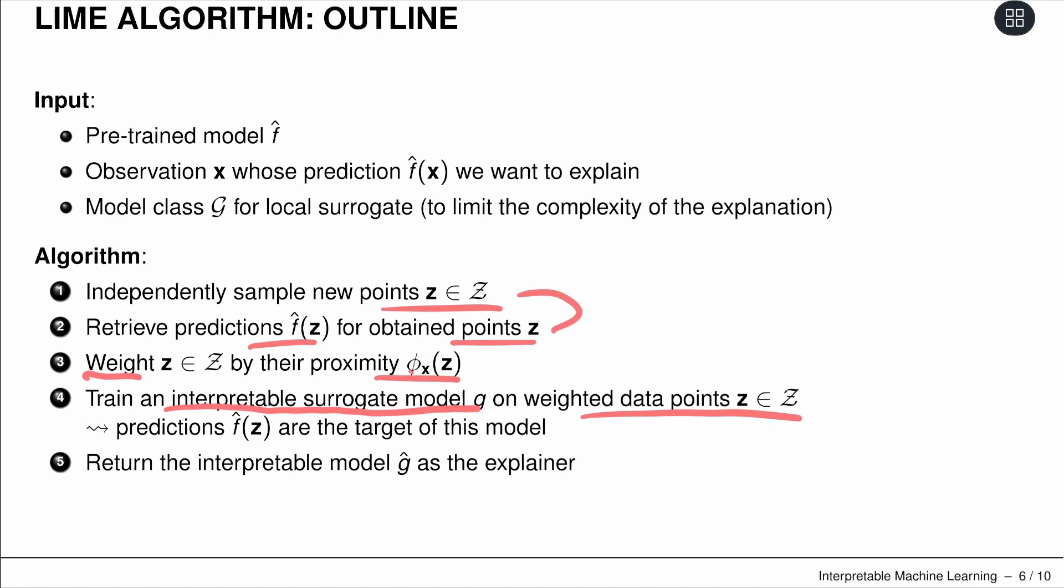Some of them are more important than others. The labels for training come from F hat. Then we return the interpretable model G hat as the explainer.